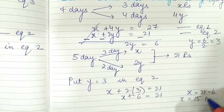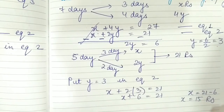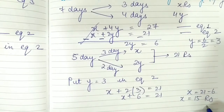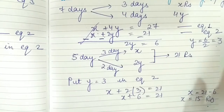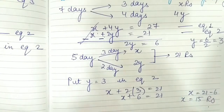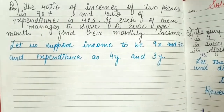Putting y equals 3 in equation 2: x plus 6 equals 21, so x equals 15. The fixed charge is 15 rupees and the additional charge per day is 3 rupees.